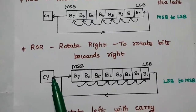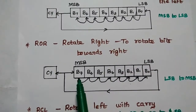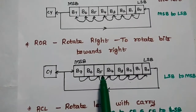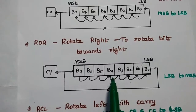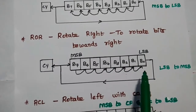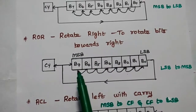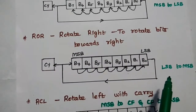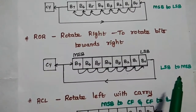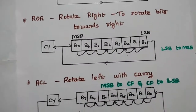Next is Rotate Right (ROR) — to rotate bits towards the right side: B7 to B6, B6 to B5, B4, B3, B2, B1, B0. In ROR, the LSB is given to the MSB. That is, LSB goes to MSB.